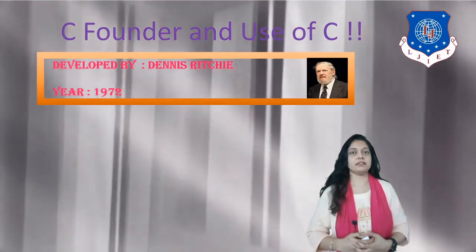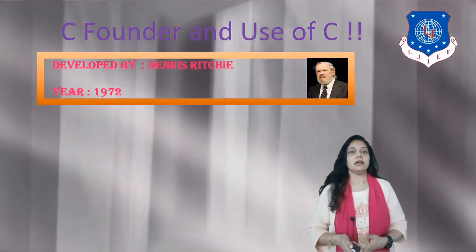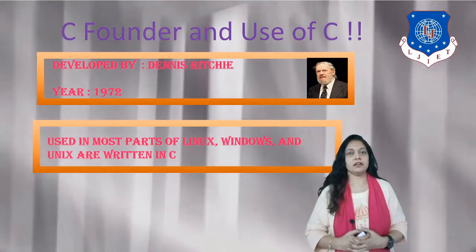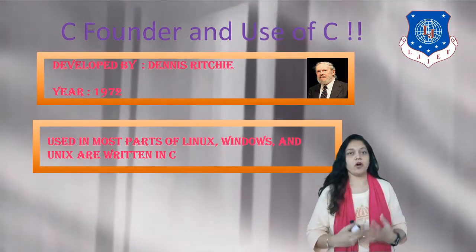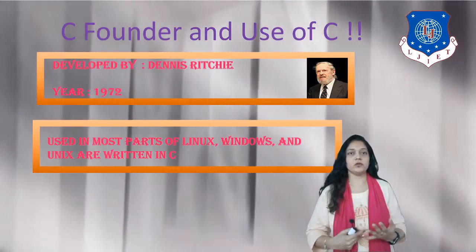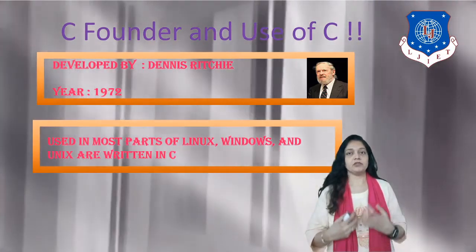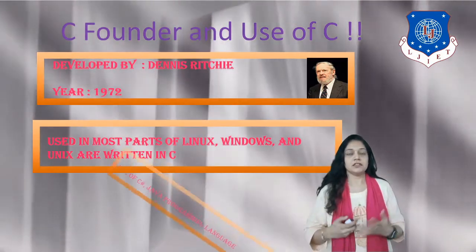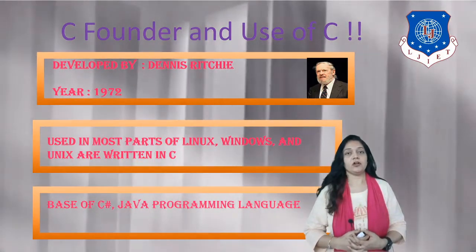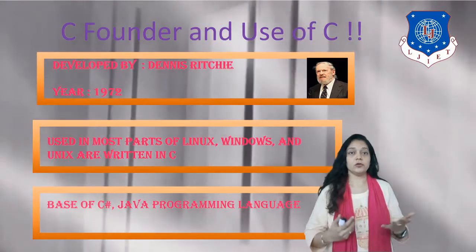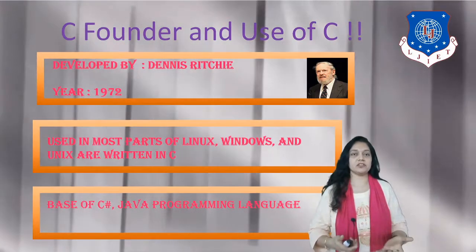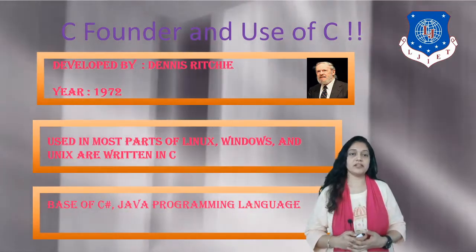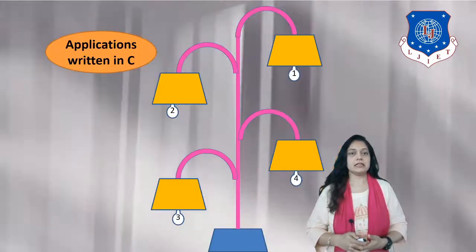This is the picture of Dennis Ritchie. C language is used in operating systems like Linux, Windows, and Unix — many parts of these OSes are developed using C. This is one reason for its popularity. Not only OS, but programming languages are also developed using C; for example, C Sharp and Java are also developed in C.